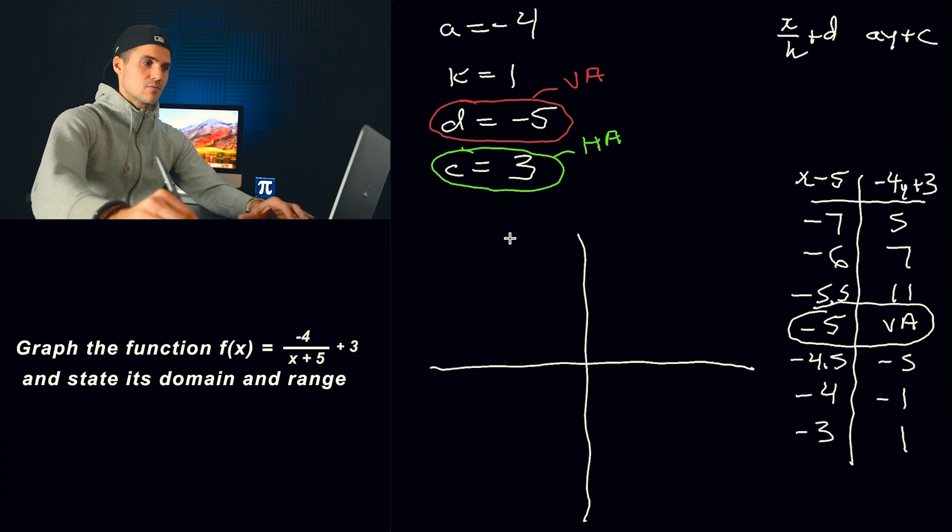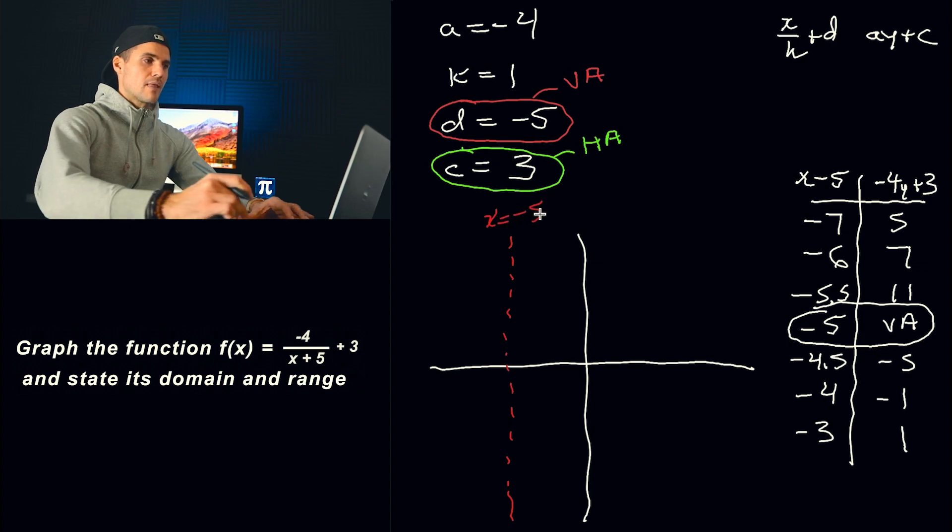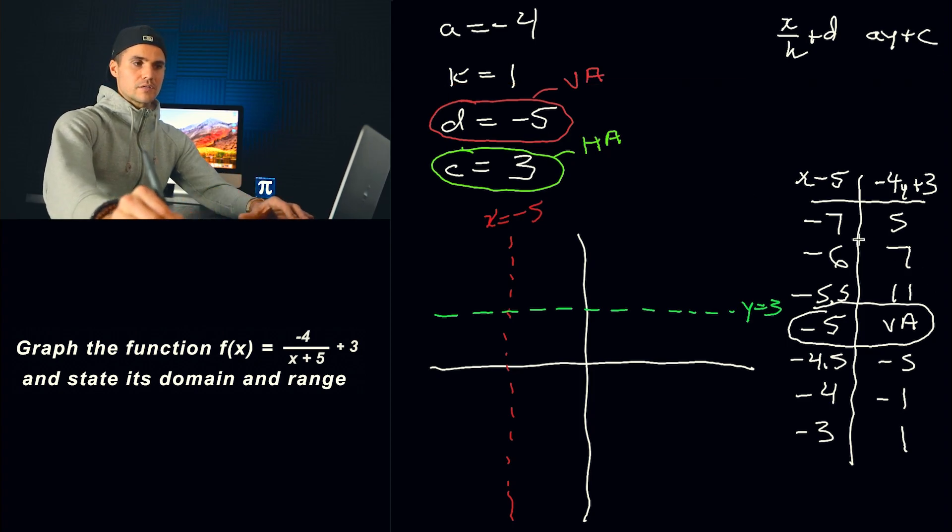So I'm going to plot the vertical asymptote at negative 5. That's going to be here. So we got x equals negative 5. And then I like to plot the horizontal asymptote at 3. So that's going to be right there. We got that horizontal asymptote of 3. And then from here, I like to plot these points around these vertical asymptotes.